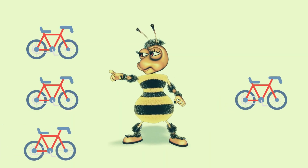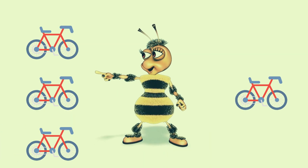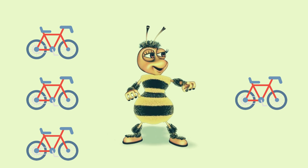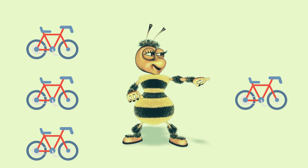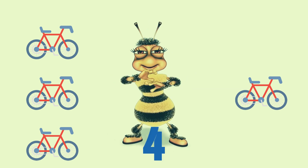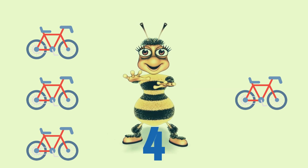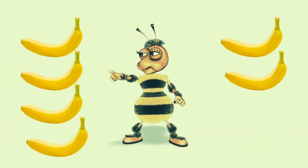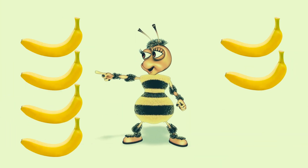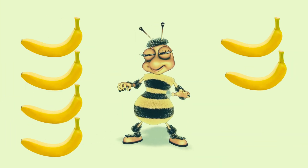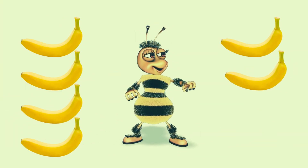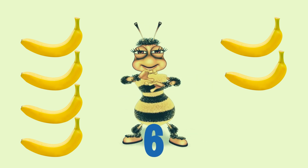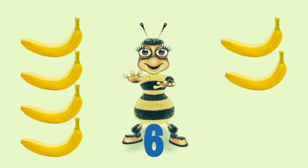How many bicycles do you see on the screen? Four bicycles. How many bananas do you see on the screen? Six bananas.